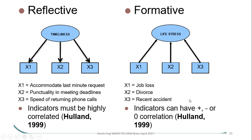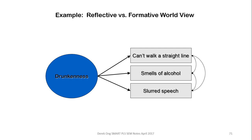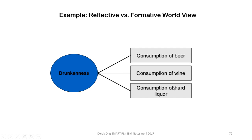Other things to consider when looking at reflective versus formative: reflective indicators are interchangeable and highly correlated. For example, drunkenness can be reflected in whether you can walk in a straight line, smell of alcohol, or slurred speech. But if you're looking at what are the contributors to drunkenness, it could be the consumption of many different spirits — those would be the formative indicators.